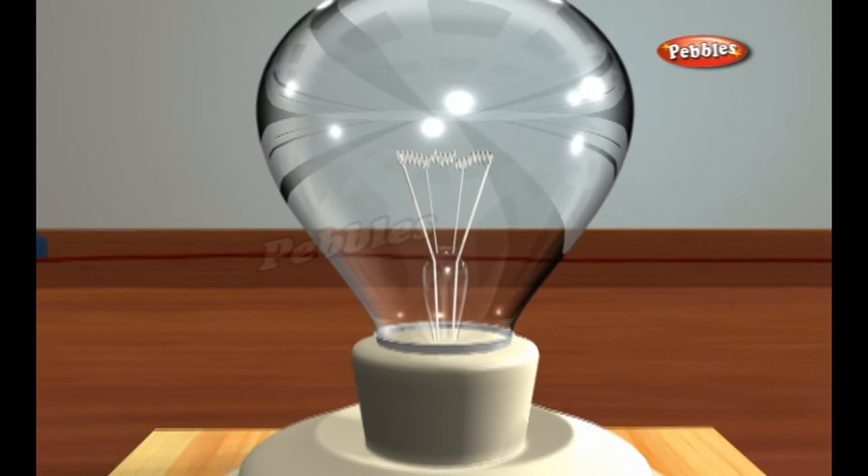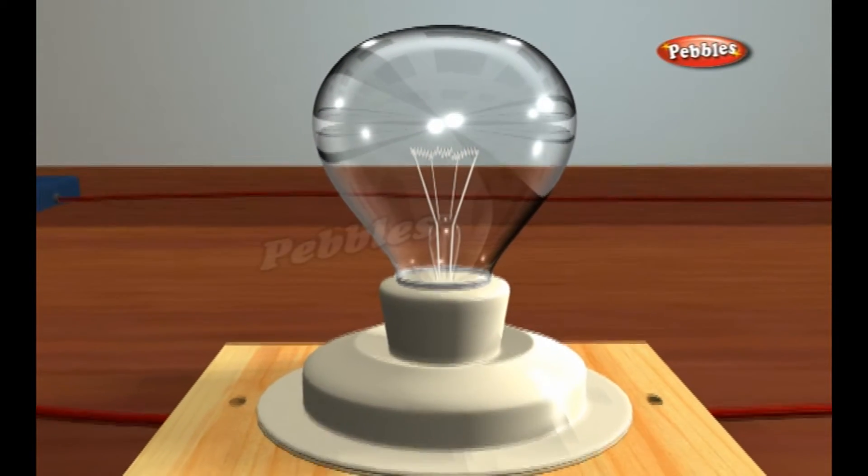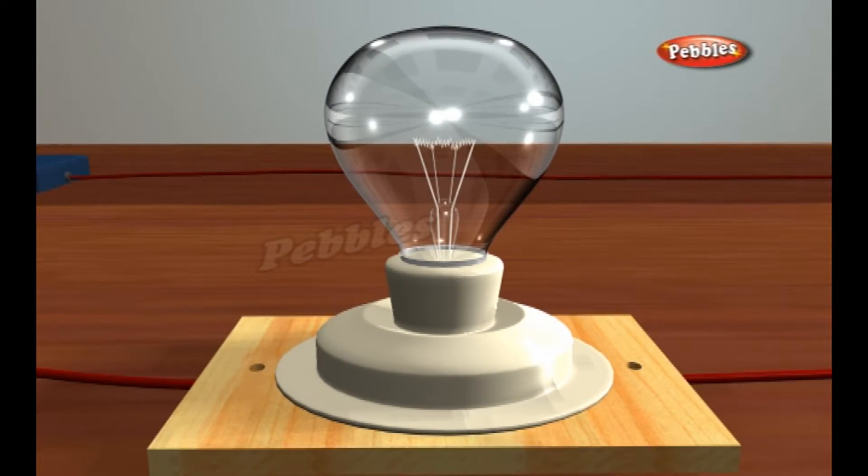The wires and the filament are housed in a glass bulb which is filled with an inert gas such as argon.